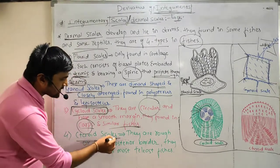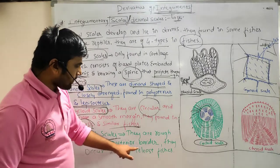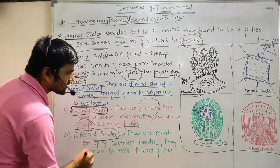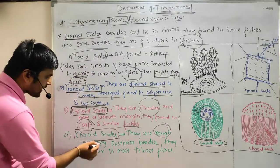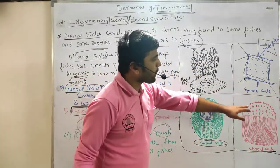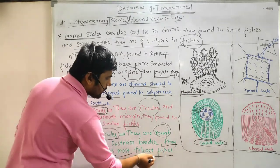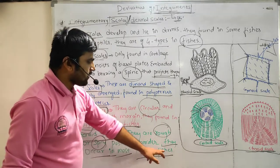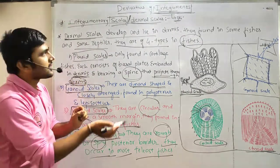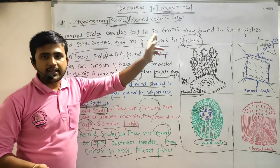The fourth type is ctenoid scales. They are rough and spiny at the posterior border, and they occur in most teleost fishes. As seen in the diagram, the posterior border of ctenoid scales is rough and spiny. They are mainly found in teleost fishes. This concludes our discussion on derivatives of integument — specifically integumental scales and dermal scales of fishes.